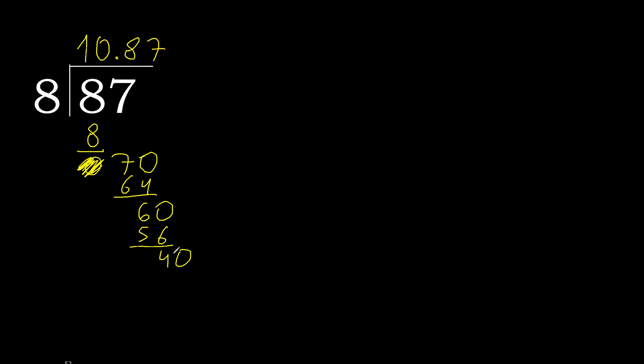Point — point is here. OK, 40. 8 multiplied by 5 is 40. 40 minus 40 is 0. 0 — therefore finish it.